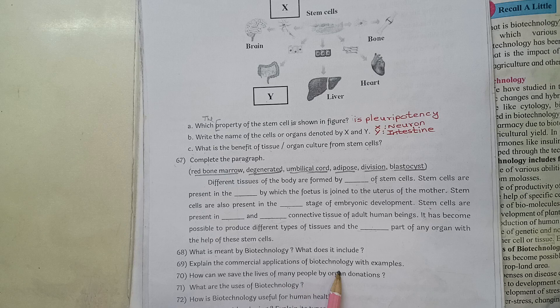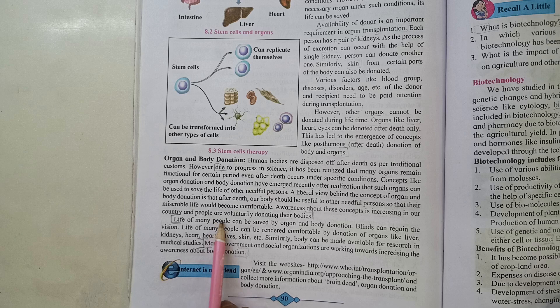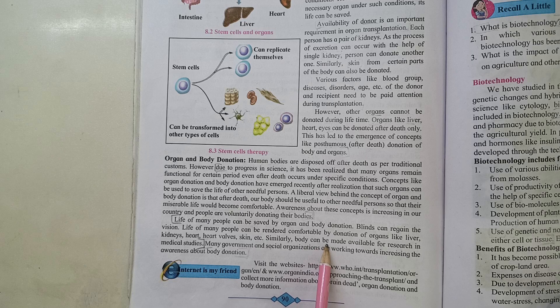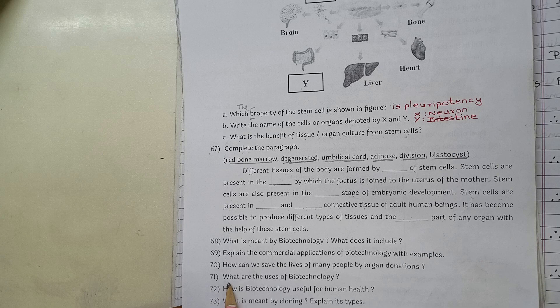Question 70: How can we save the lives of many people by organ donation? This answer is on page 90. Life of many people can be saved by organ and body donation. Blind people can regain vision; life of many people can be made comfortable by donation of organs like liver, kidneys, heart, heart valves, and skin. Similarly, the body can be made available for research in medical studies.